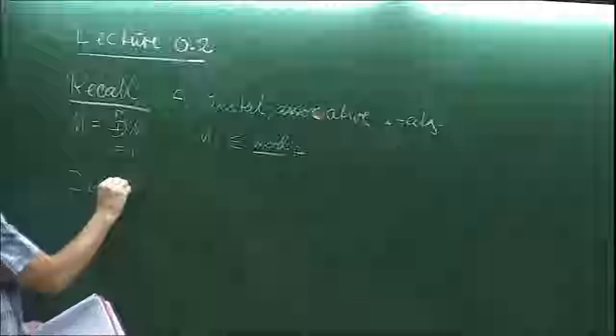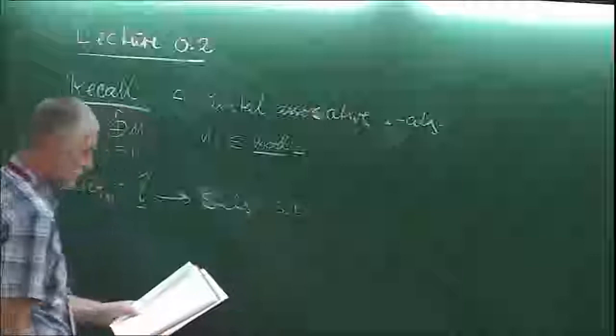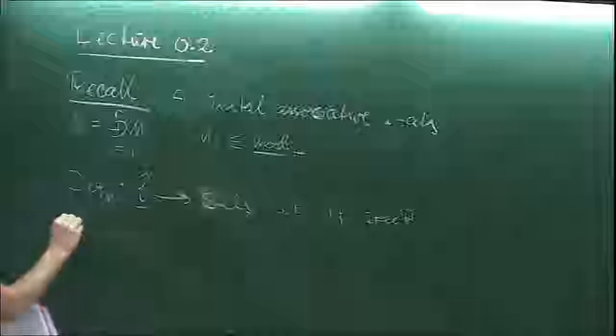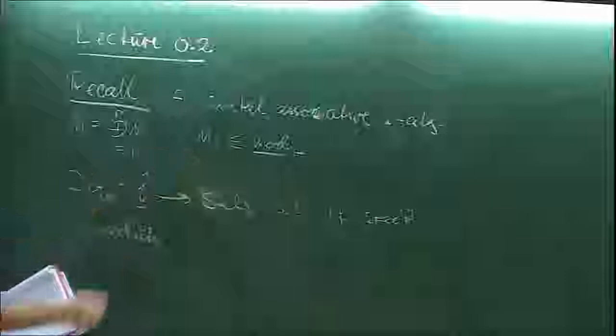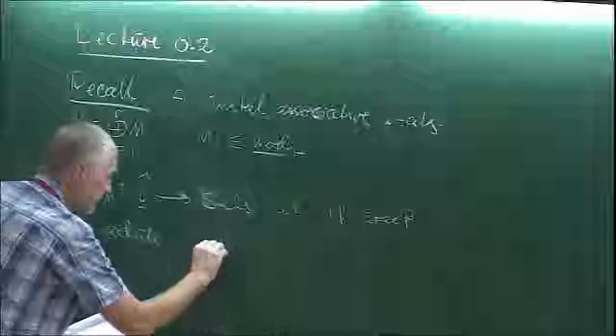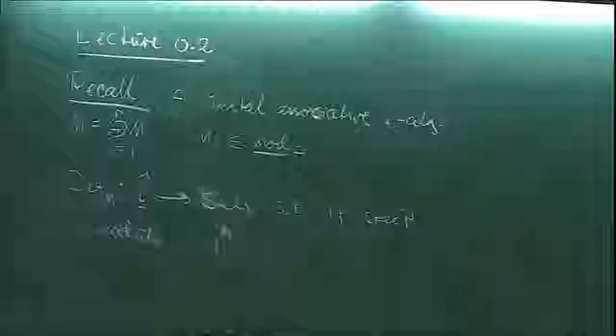Then we defined the deformation functor def_M from the category L-hat into sets. The point with that functor was that if Spec R is the moduli of right A-modules, then the deformation functor def_M — where I put an A-pair because M is a family of A-modules, just to indicate what the ring is.